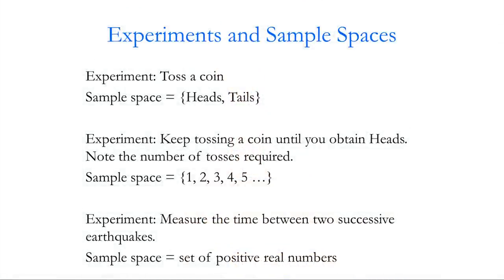Probability is used for situations which occur randomly — for example, the outcome of tossing a coin or the length of time between two successive earthquakes. The standard terminology is to call these situations experiments, and the set of all possible outcomes the sample space. For tossing a coin, the experiment gives two possible outcomes; the sample space consists of heads and tails — a finite sample space with only two elements.